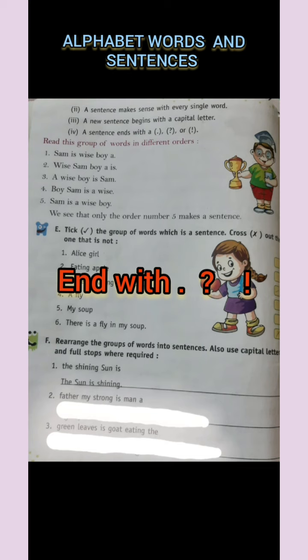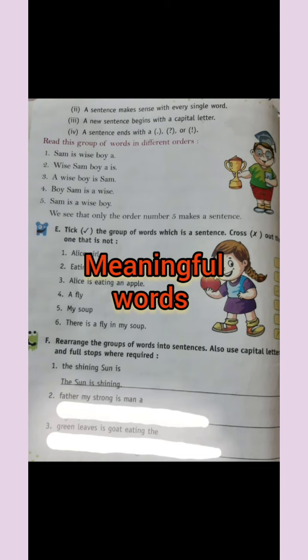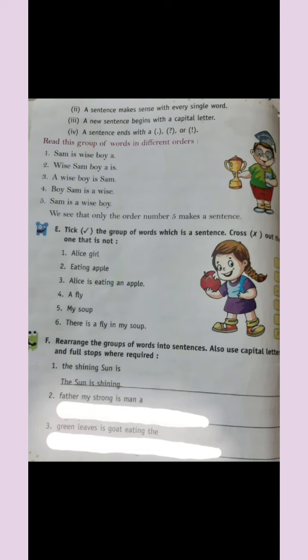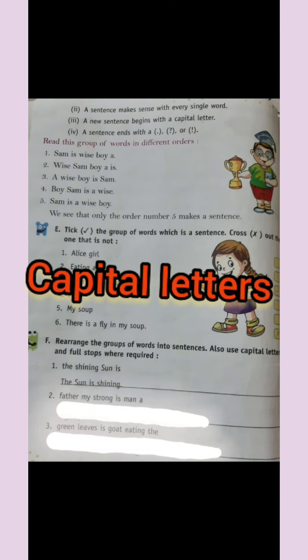So children, in a sentence: first, it should be in words; second, every word should have meaning; third, a sentence starts with a capital letter; and fourth, it will end with a full stop, question mark, or exclamation.